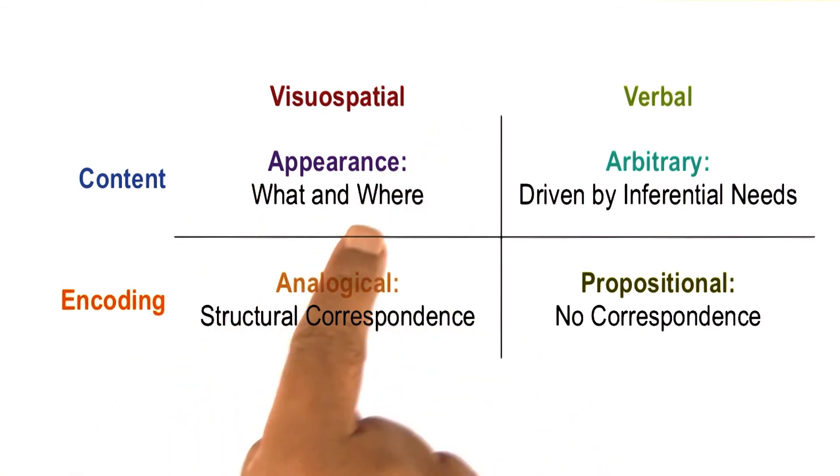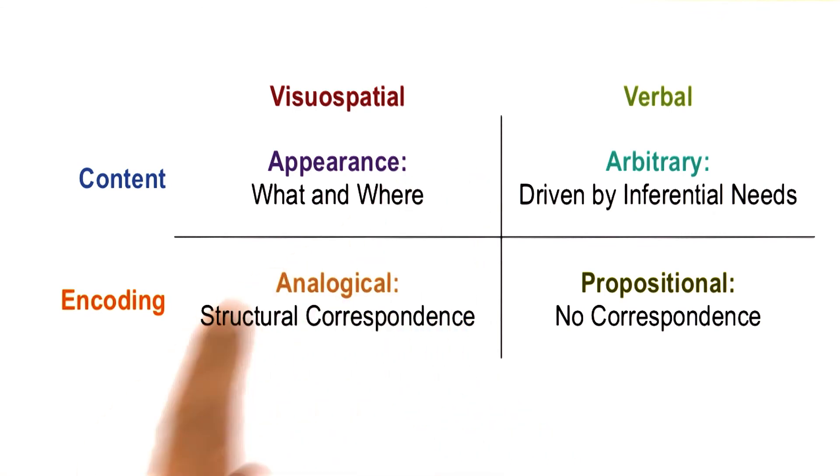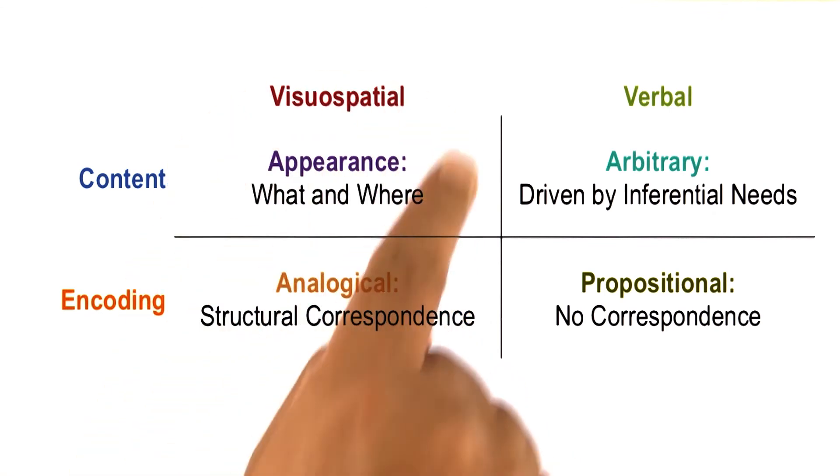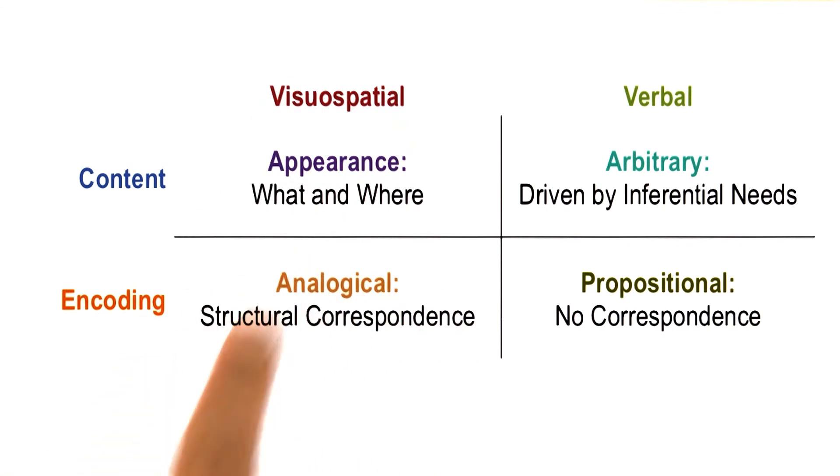But we have yet to fully understand the role in human cognition and we are certainly yet to build AI agents that can deal with visual-spatial knowledge and analogical representations. That's why this area will be explored in later lessons.